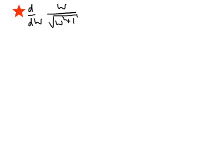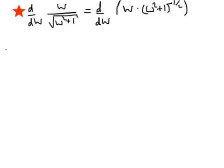The next exercise asks us to differentiate the ratio of w divided by the square root of w squared plus 1. I'm going to start by writing this as the derivative with respect to w of w multiplied by w squared plus 1, all to the power of minus one half. Looking at this, we have a product of w multiplied by that factor, so we use the product rule.